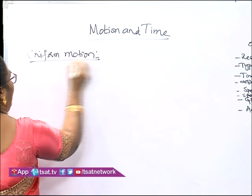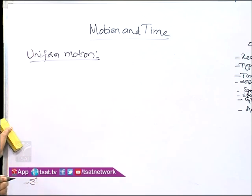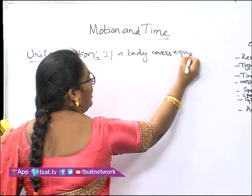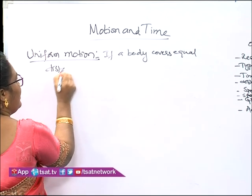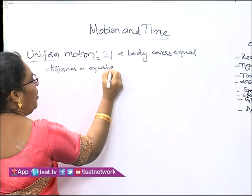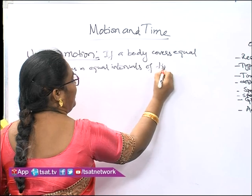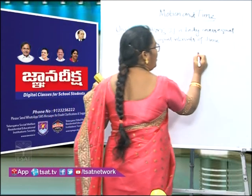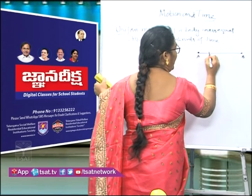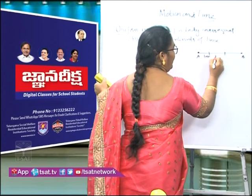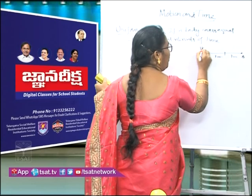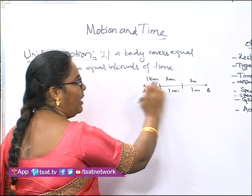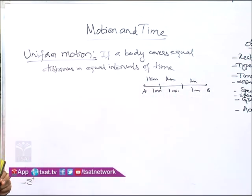Uniform motion: when does a body exhibit uniform motion? If a body covers equal distances in equal intervals of time, we say that the body is in uniform motion. For example, to reach from point A to point B, if it takes 1 minute for each segment and covers 1 kilometer each time — the time interval is the same and the distance covered is also the same — then we say that body is in uniform motion.